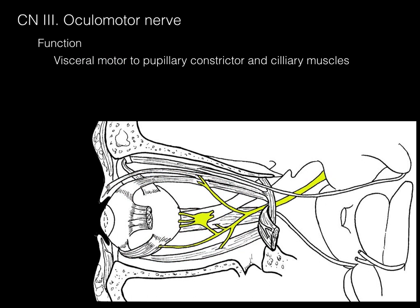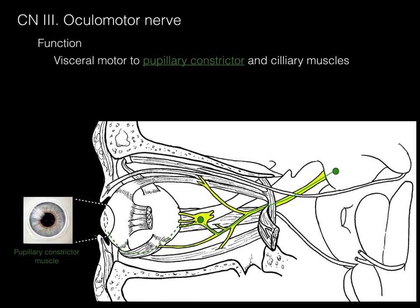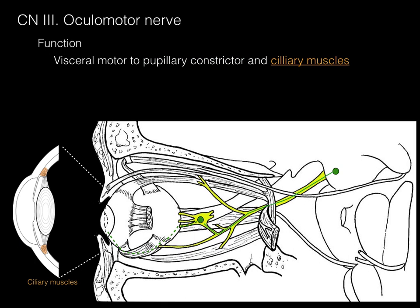There is also visceral motor innervation to two muscles: the pupillary constrictor and the ciliary muscles. This arises from a structure homologous to the lateral horn gray matter called the accessory oculomotor nucleus. It sends information to a peripheral ganglion called the ciliary ganglion, which then sends information to the front of the eye. The pupillary constrictor causes the pupil to constrict when light is shone in the eye, while the ciliary muscles change the shape of the lens to allow focusing at different distances.